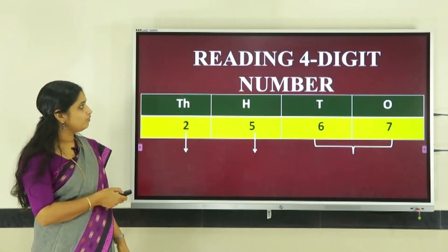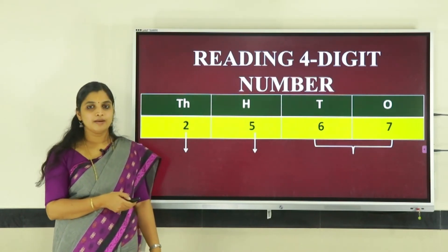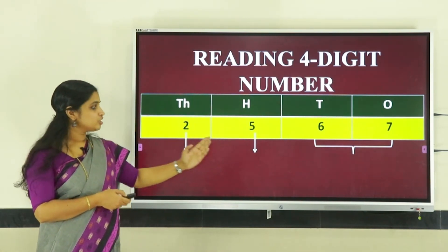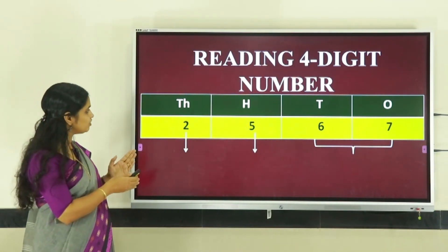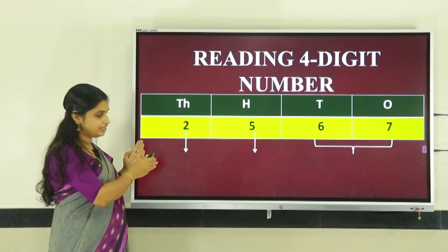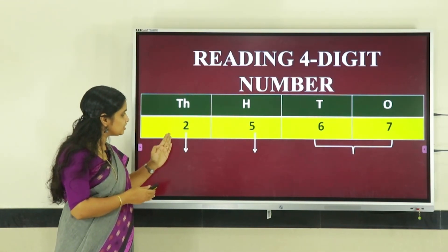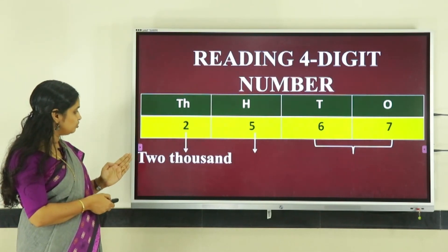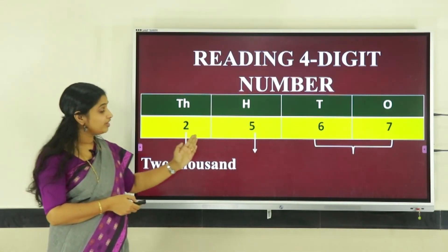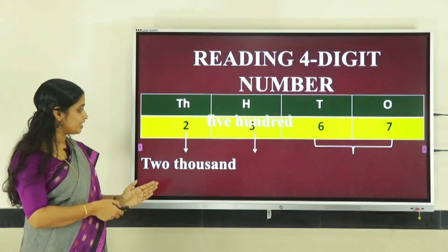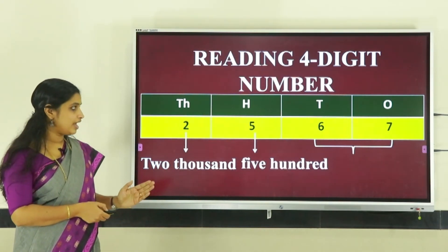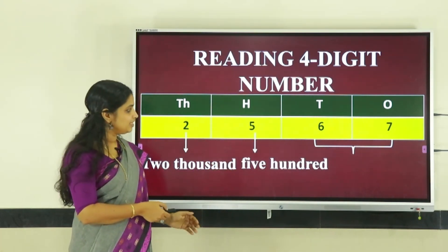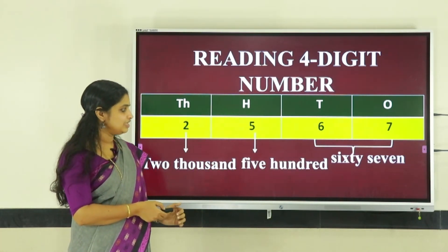Now let us see how we can read a four-digit number. Here you can see the number 2, 5, 6, 7. When we read a number, we start from the thousands place. Two is in the thousands place, so we read two thousand. Five is in the hundreds place, so we read five hundred. Tens and ones are usually read together — six and seven make sixty-seven. So the number is two thousand five hundred sixty-seven.